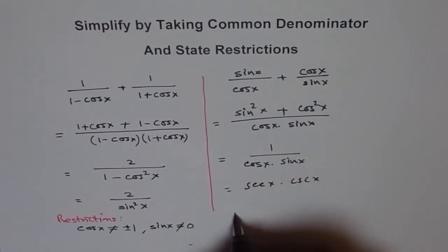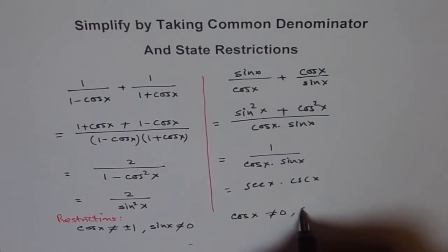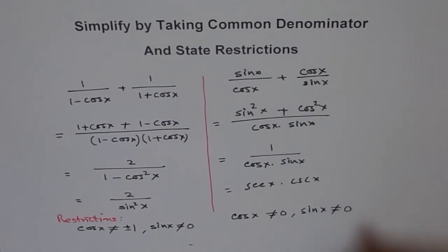Here, what are the restrictions? The restrictions are that cos x is not equal to 0 and sin x is not equal to 0. So these are the restrictions.